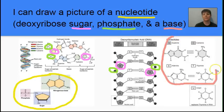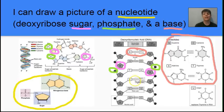The different bases found in DNA molecules are guanine, cytosine, adenine, and thymine. We always have adenine pairing with thymine, and we always have cytosine pairing with guanine.